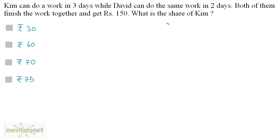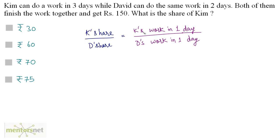To find out the share of Kim, we first need the ratio of the share of Kim and the share of David. That will be equal to the ratio of work done by Kim in 1 day and work done by David in 1 day.